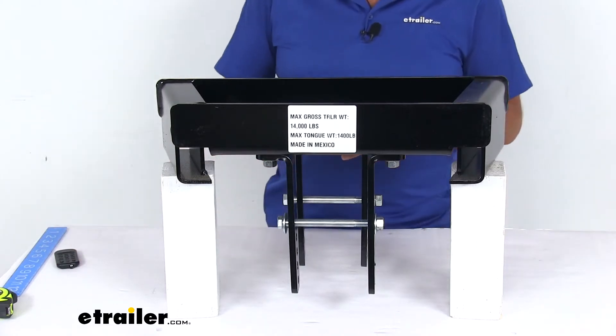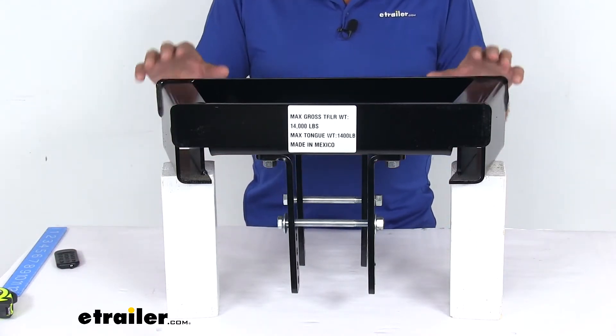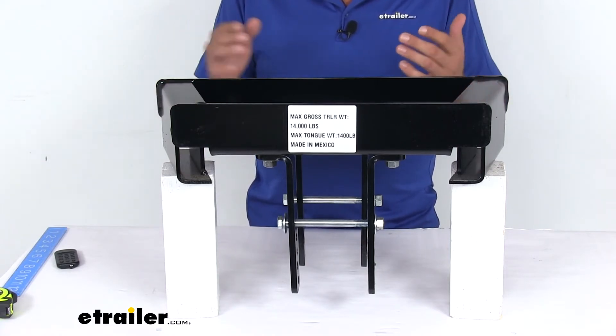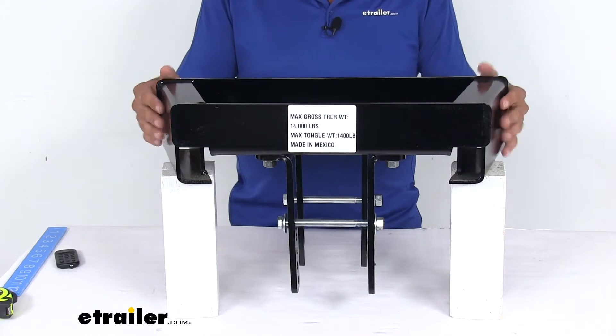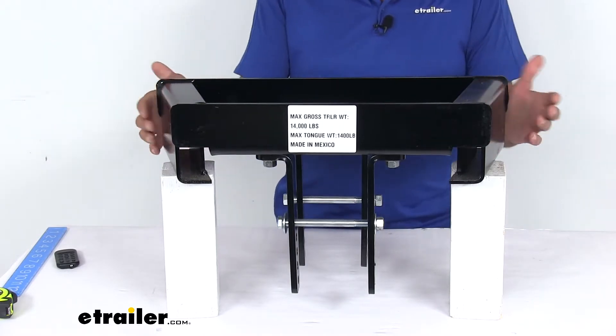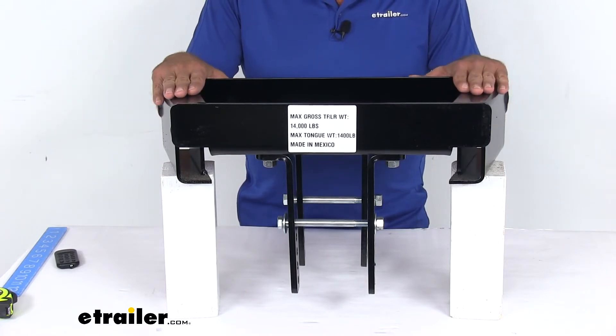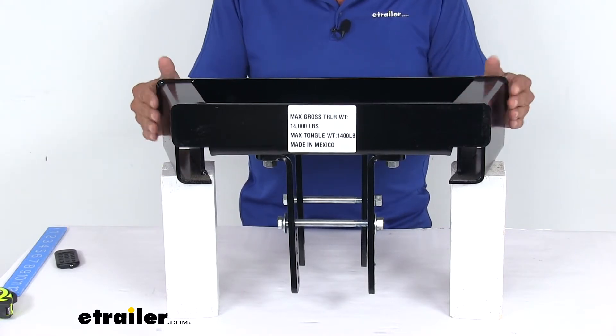Hey guys, it's Randy here at eTrailer.com. Today we're taking a look at a really neat product. This is going to allow you to turn a straight or pole tongue type trailer into a trailer that we can use most every weight distribution system on. This is from Reese, their pole tongue adapter for weight distribution systems.